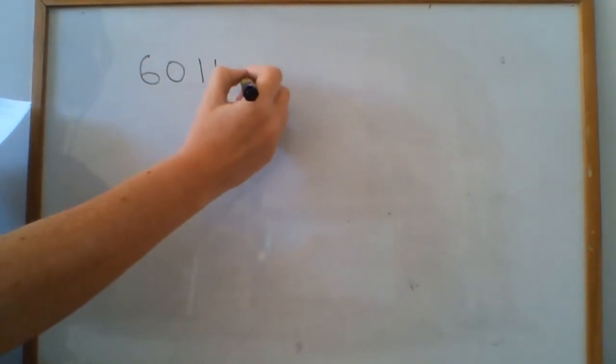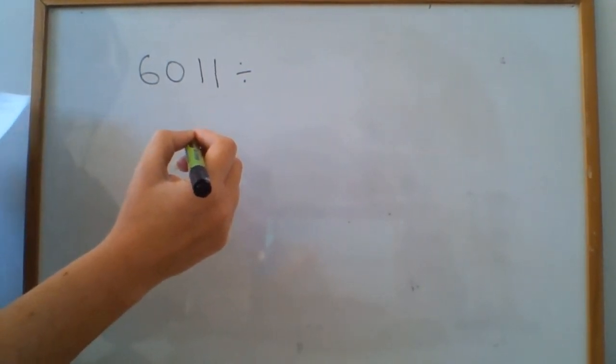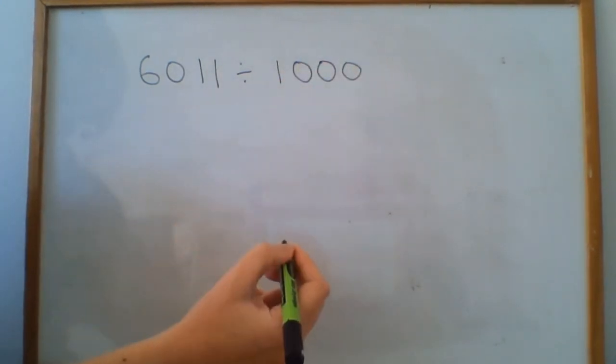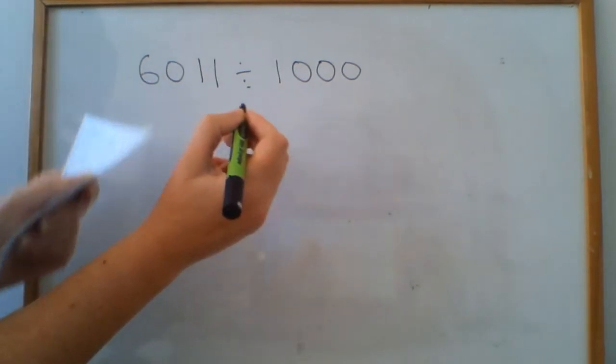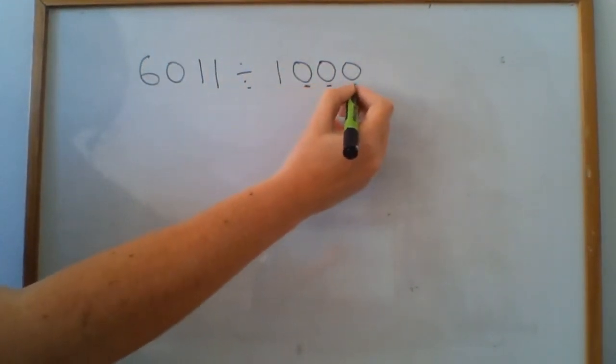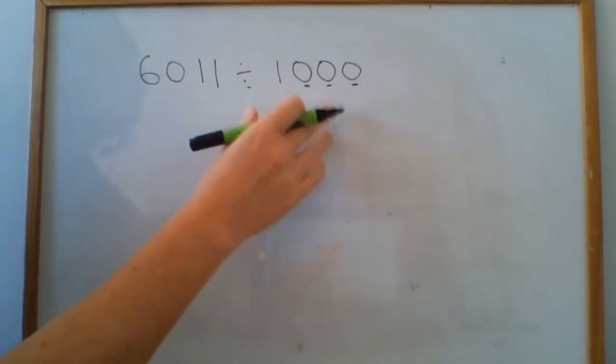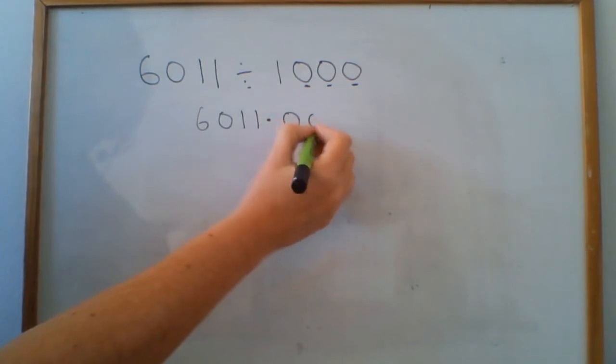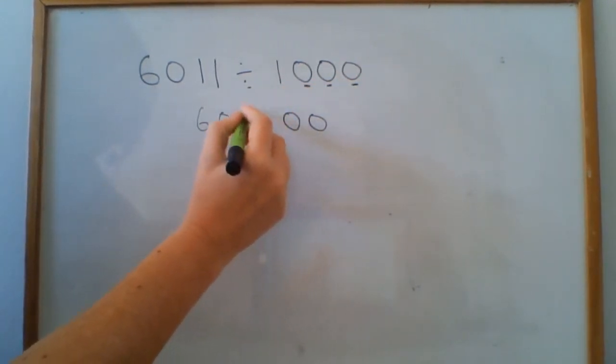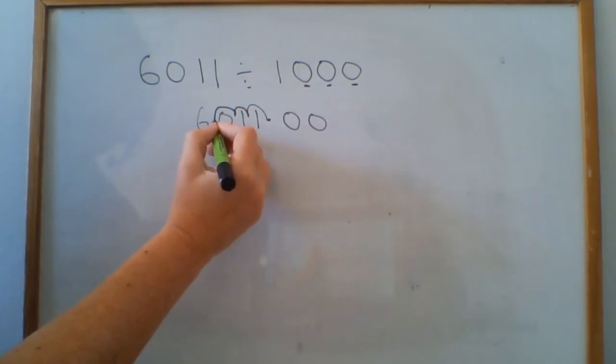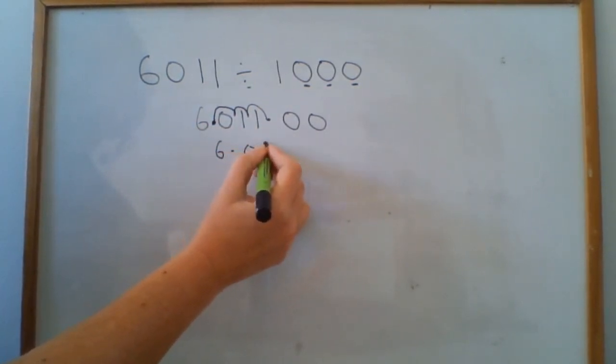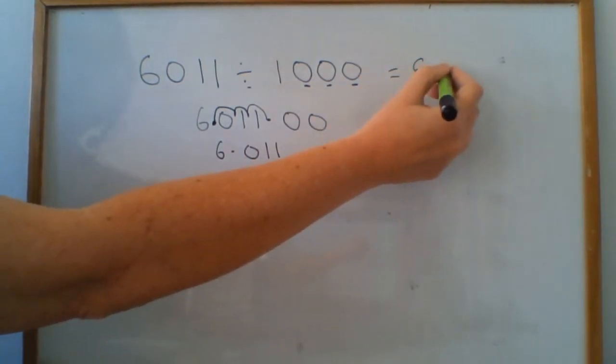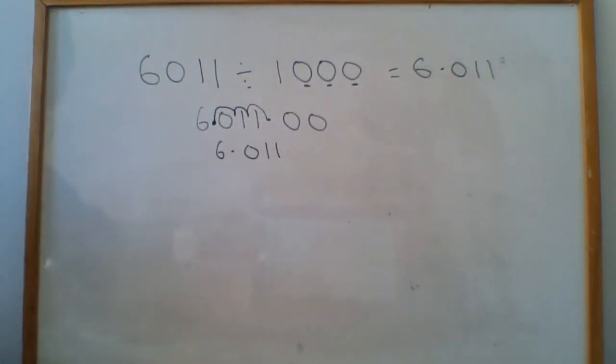Number four, we did a few of these before we broke up for our Easter break. So this one is 6011 divided by 1000. What we need to look at here is the fact we're doing division. So our number has to get smaller. And the fact that we're dividing by three zeros, three placeholders there, it's going to get 1000 times smaller. So at the moment, we know 6011, our decimal point would be here. Because we've got three zeros, we need to move it three places back, we're making it 1000 times smaller. So I can go 1, 2, 3, put my decimal in here. So my new answer will be 6.011. That is your answer to number four.